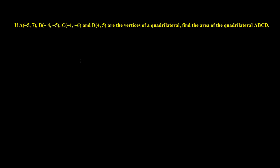In the previous video we learned how to find the area of a triangle. Now, based on the same concept, we're going to find the area of a quadrilateral. The question says: given coordinates A, B, C, D as vertices of a quadrilateral, find the area. Our quadrilateral can be any type — parallelogram, rectangle, square, or rhombus — so I'm just drawing a rough quadrilateral.